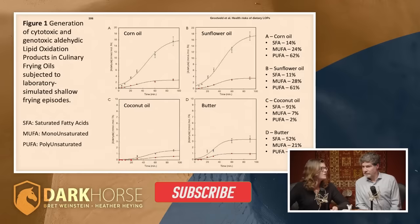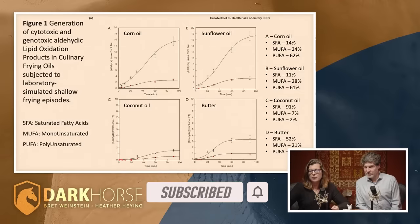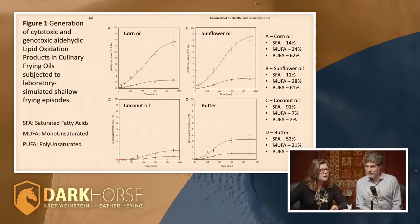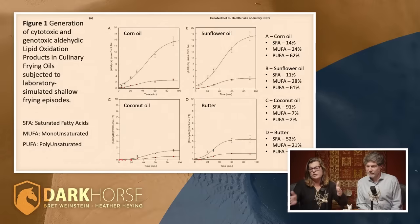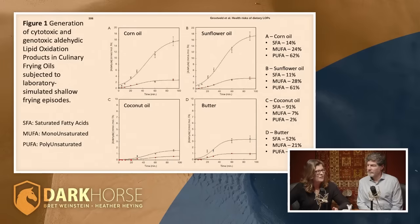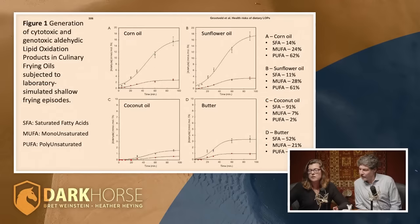In coconut oil: 91% saturated fat, with 7% monounsaturated and only 2% polyunsaturated. And butter — the numbers don't add up to 100% because butter contains milk protein, not just fat. Of the entire composition of butter: 52% is saturated fatty acids, 21% monounsaturated fatty acids, and 3.5% polyunsaturated fats — important to highlight that 3.5% figure since it may not be visible on screen.